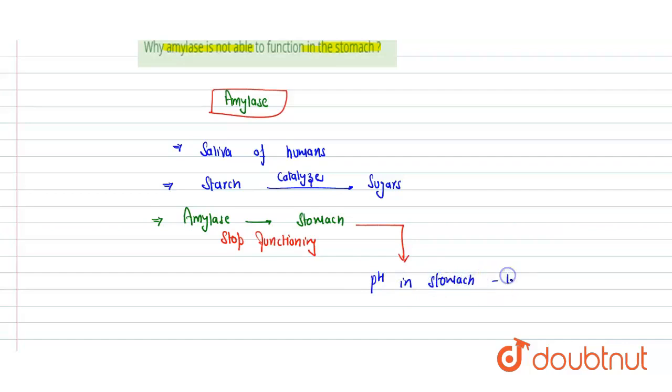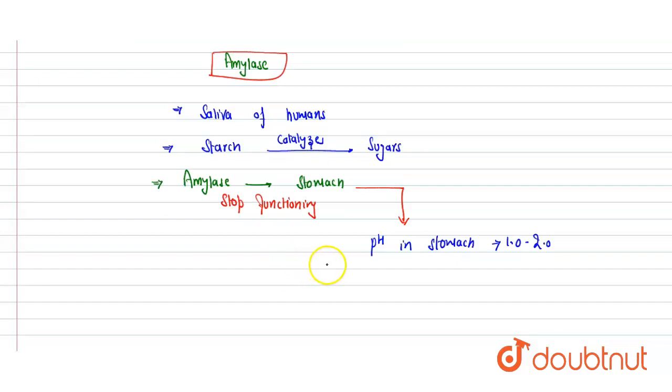usually lies between 1.0 to 2. It's very low pH, a highly acidic pH. And at this acidic pH, the amylase, which is an enzyme and protein in nature,